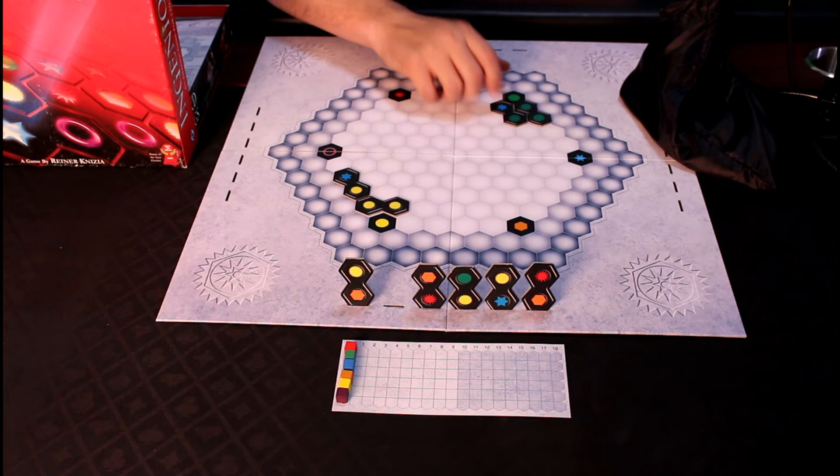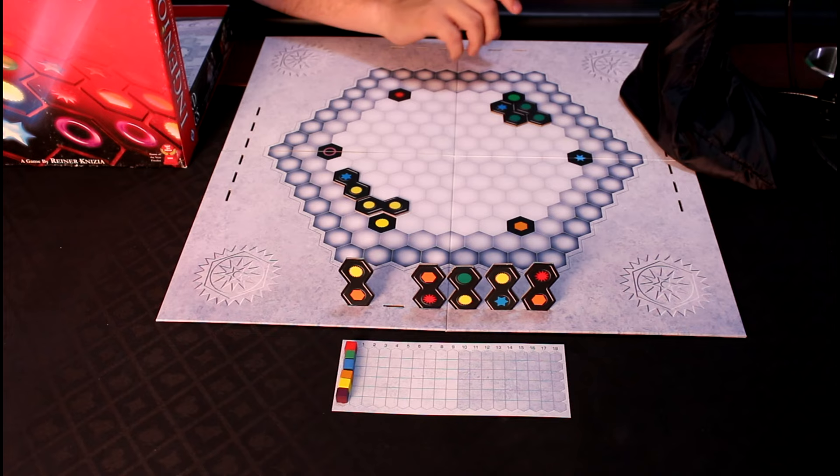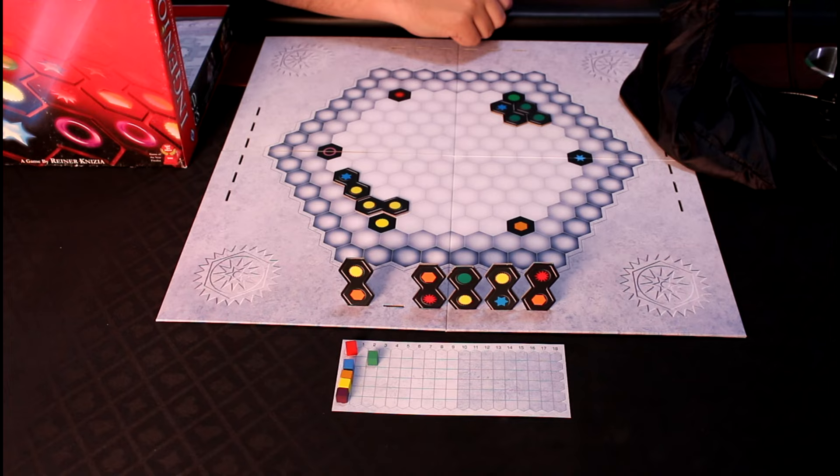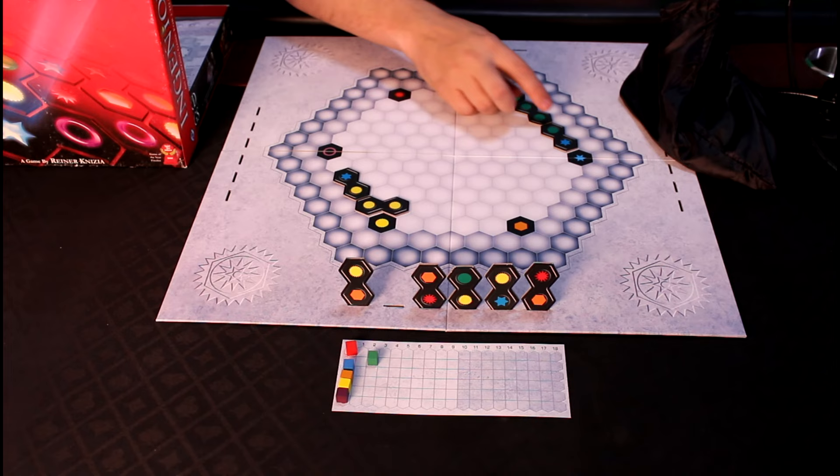For example, if I place this blue-green piece here, I would score one green point and another green point. On a future turn, I can use this section to gain even more points. But for now, I gain two green points. I move my score marker accordingly, and since my blue is not next to any, I don't unfortunately score it.